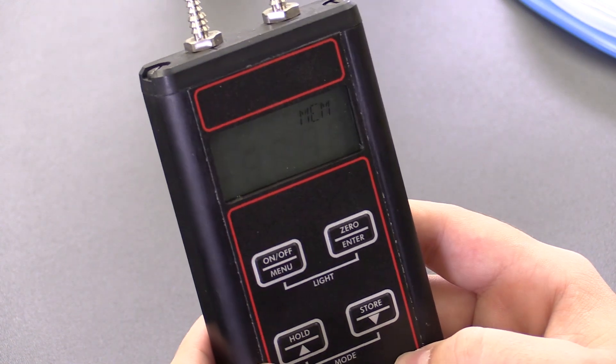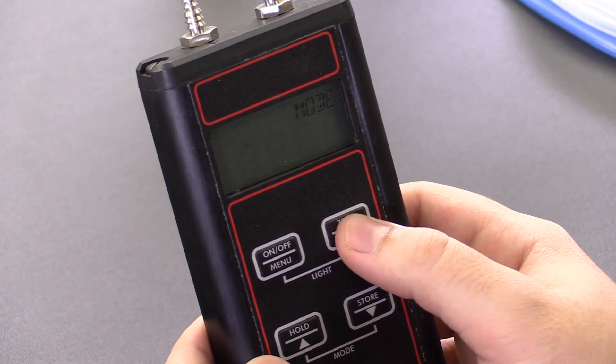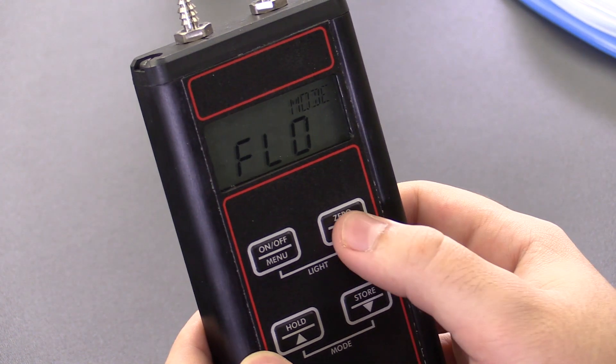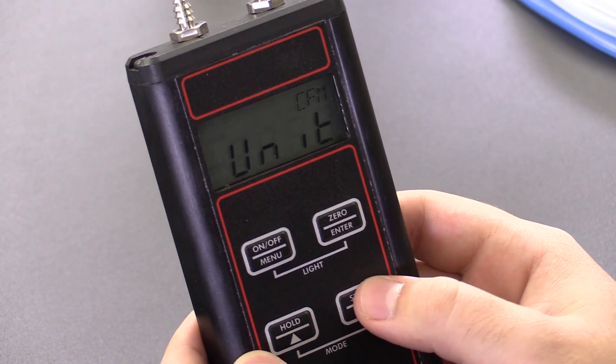From here we can go into the menu, go down to mode, enter in. We're looking for flow here, FLO. Now we'll choose our units.